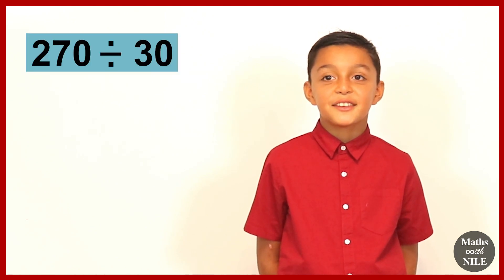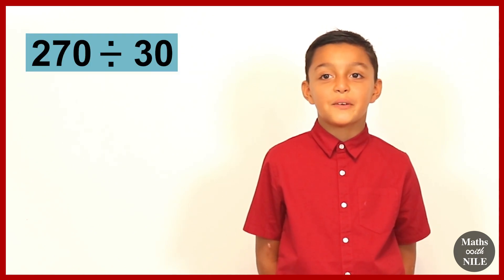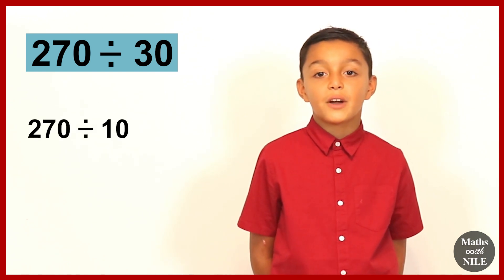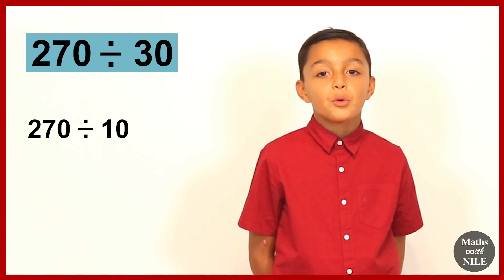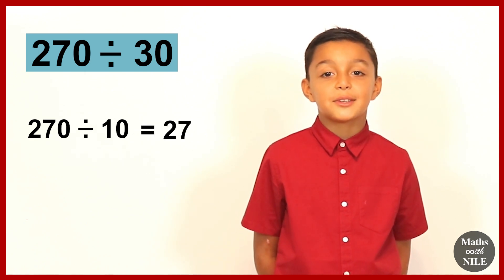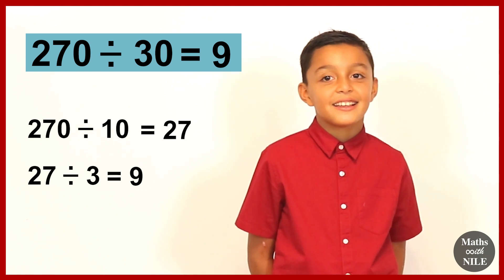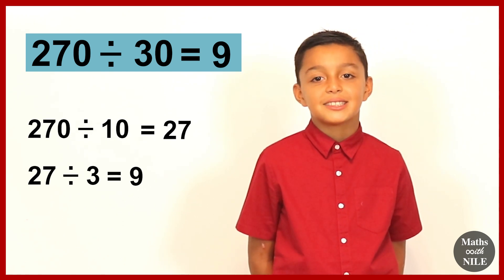Let's look at question number 21. 270 divided by 30. So we'll do 270 divided by 10, which is 27. And then 27 divided by 3 is 9. Very good. So 270 divided by 30 is 9.